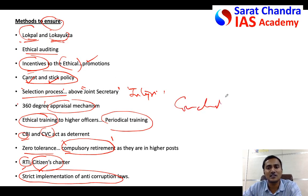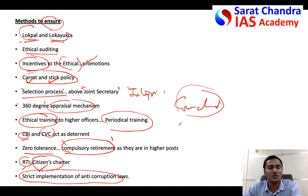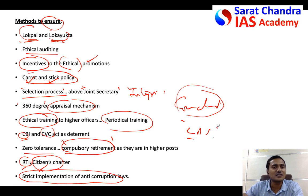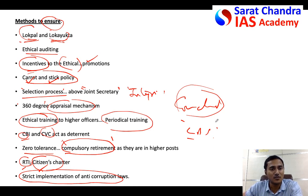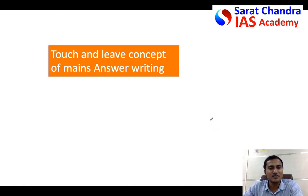To conclude this answer, say that we require people like Lal Bahadur Shastri, who resigned from the position of Railway Minister when a train accident led to a large number of deaths. We need people of such integrity.